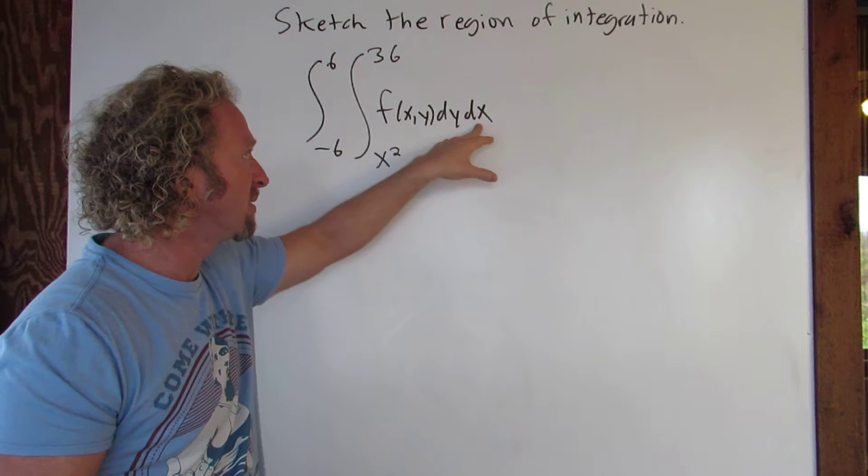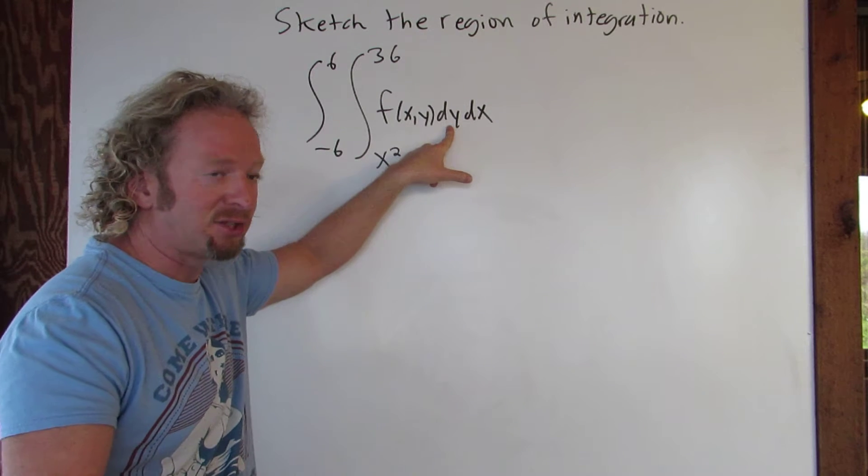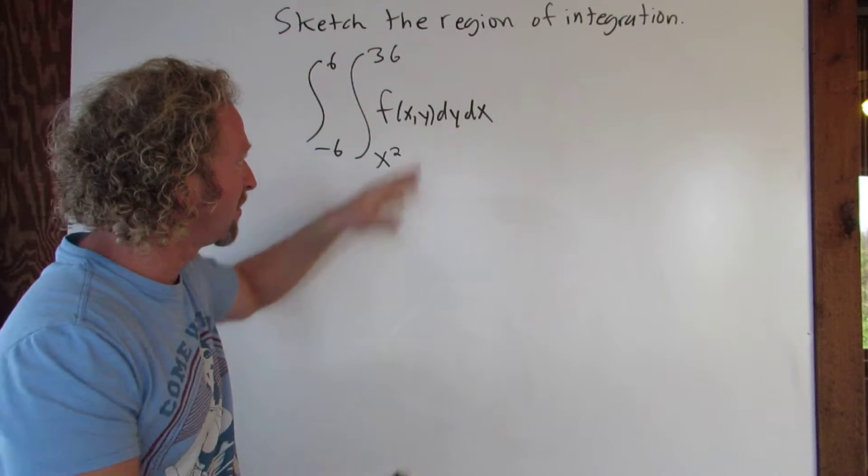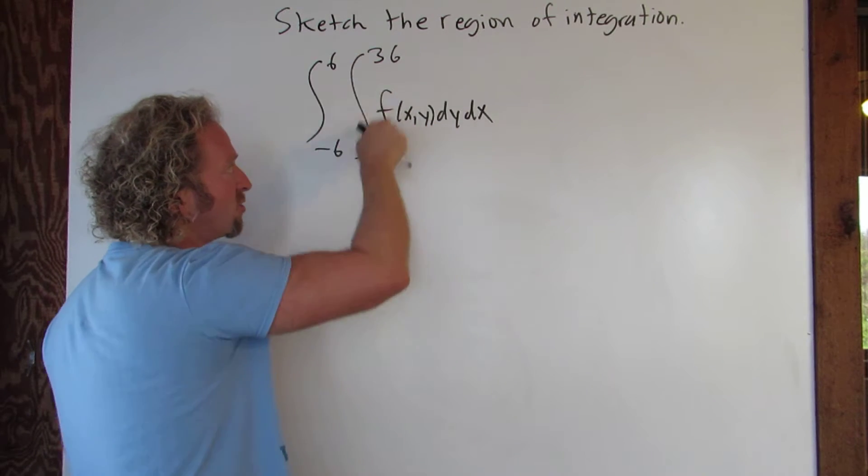If dx is first, then x is a function of y, so you have horizontal rectangles. Anyways, dy dx, so we have functions of x. Let's go ahead and draw this region.